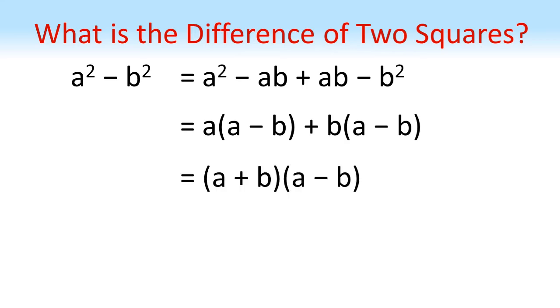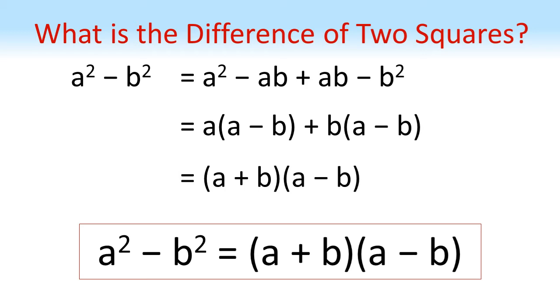Then this is the same as a plus b times a minus b. So the difference of two squares rule is a squared minus b squared equals a plus b times a minus b.